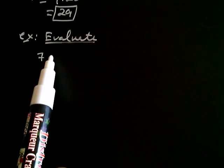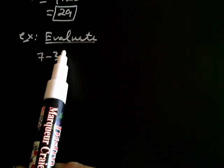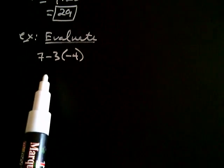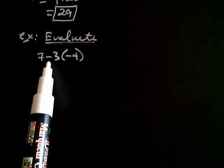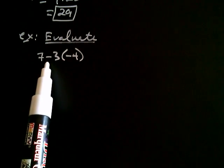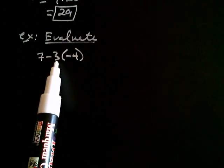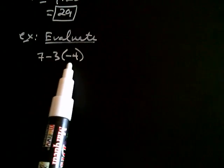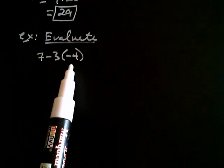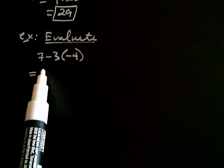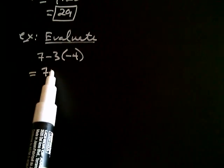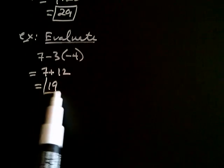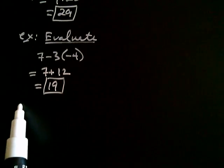Let's practice. Say we have 7 minus 3 times negative 4. When there's multiplication preceded by subtraction, think of the subtraction sign as a negative belonging with the 3, making it negative 3 times negative 4, which is positive 12. It becomes 7 plus 12, which equals 19. That was pretty easy — let's try another one.